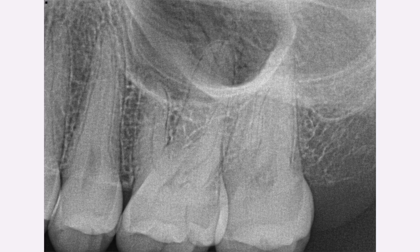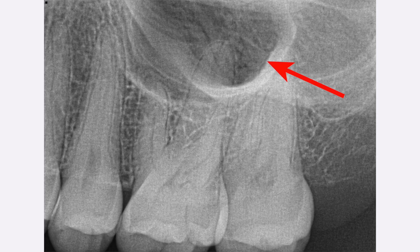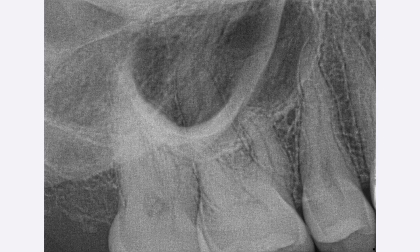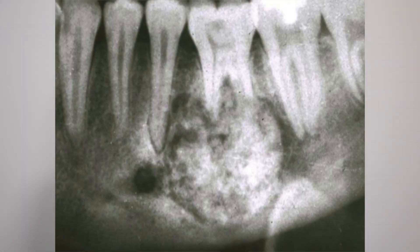Something that is super normal — and patients sometimes think it isn't — are the maxillary sinuses and the zygomatic process. On your upper teeth you might see something like this and feel concerned, but do not — this is completely normal to see.